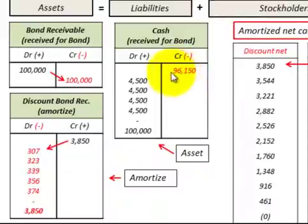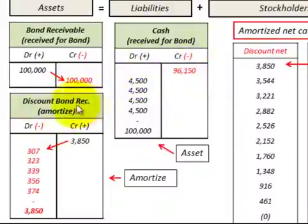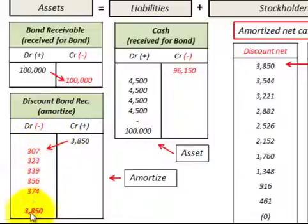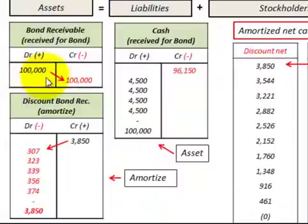We need a balancing entry between the $100,000 debit and the $96,150 credit. We use a discount on bonds receivable — that's a contra account to bonds receivable that reduces the bonds receivable account — and we credit it for the difference of $3,850. Over the life of this bond we amortize this bond discount down to a zero balance, so at the maturity date the carrying value of the bond will be $100,000.